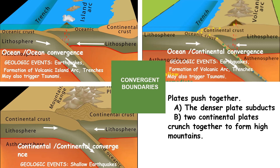The resulting geologic events depend on what type of plates converge. For ocean-to-ocean convergence, likely events include earthquakes, formation of a volcanic island arc, trenches, and possible tsunamis. In ocean-to-continental convergence, events include earthquakes, volcanic arcs, trenches, and possible tsunamis. For continental-to-continental convergence, geologic events are shallow earthquakes and the formation of mountain ranges.